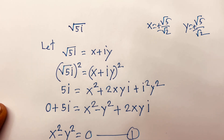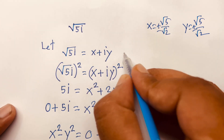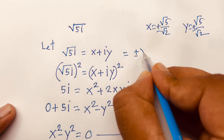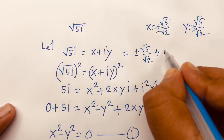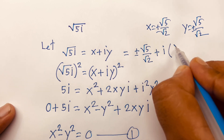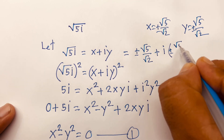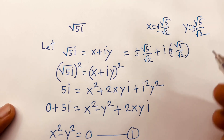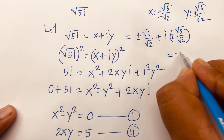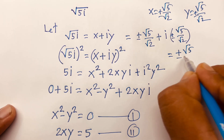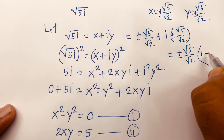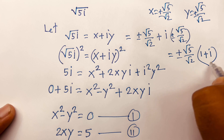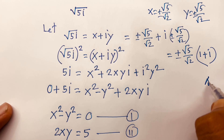Substituting back into x + iy: x = ±√5/√2 and y = ±√5/√2, so we get ±√5/√2 + i·(√5/√2). Factoring out ±√5/√2 as common, the final answer is ±√5/√2 · (1 + i). This confirms our final answer.